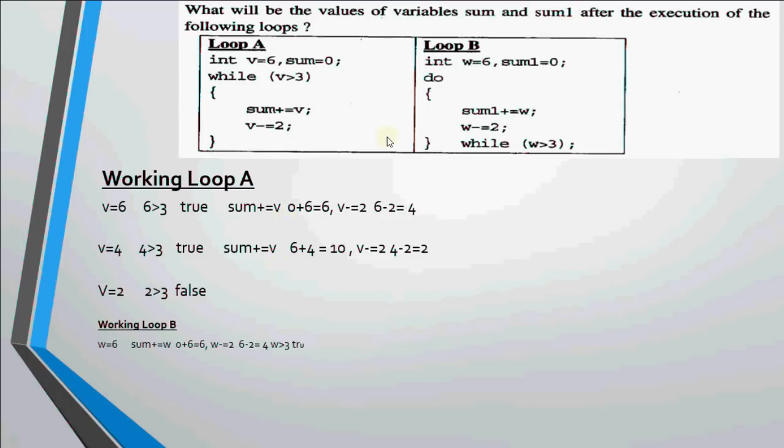Now let's move on to loop b. In loop b, we have w as 6 and sum1 as 0. There is no condition on the top since it's exit control. We just move inside without checking any condition. And the 6 gets added to sum1. So sum1 was initially 0. 0 plus 6 gives you 6.